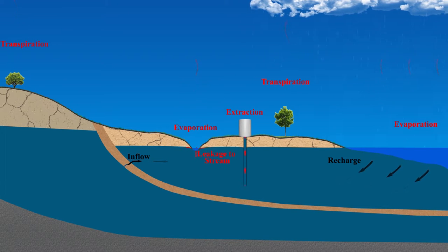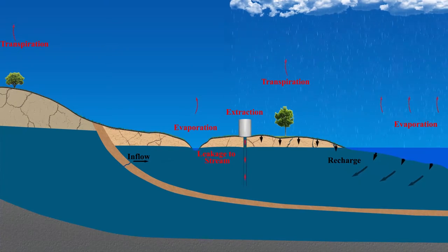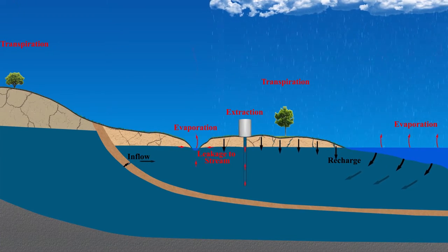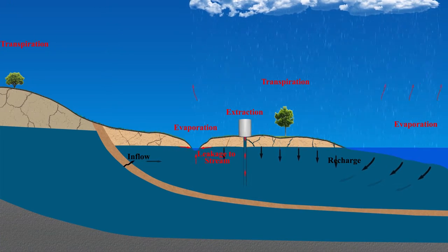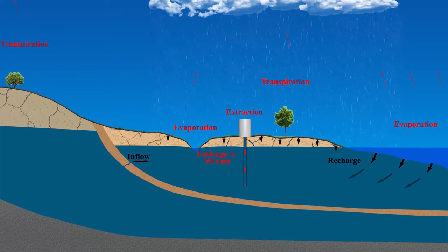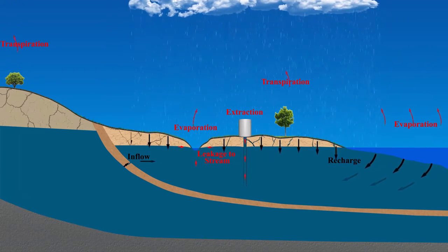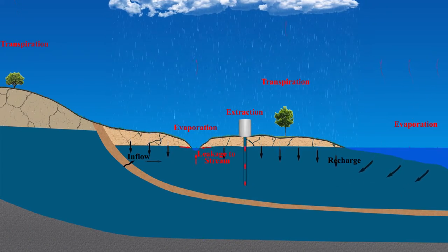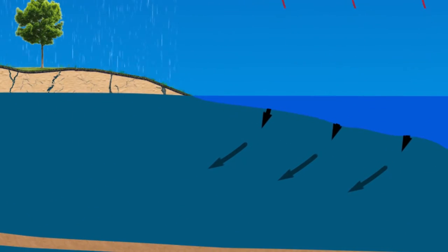Water that enters an aquifer from the surface is called recharge. Recharge includes rainwater that seeps down through the soil to reach the water table. Only a small portion of total precipitation gets down this far. Recharge also includes water draining into the aquifer from streams and lakes.